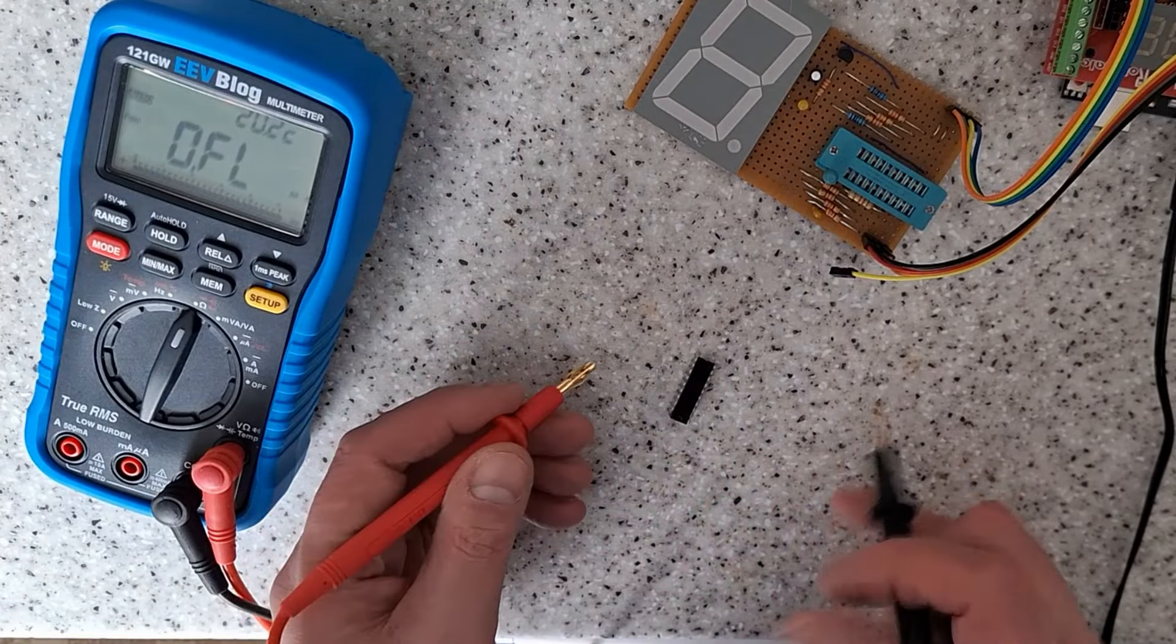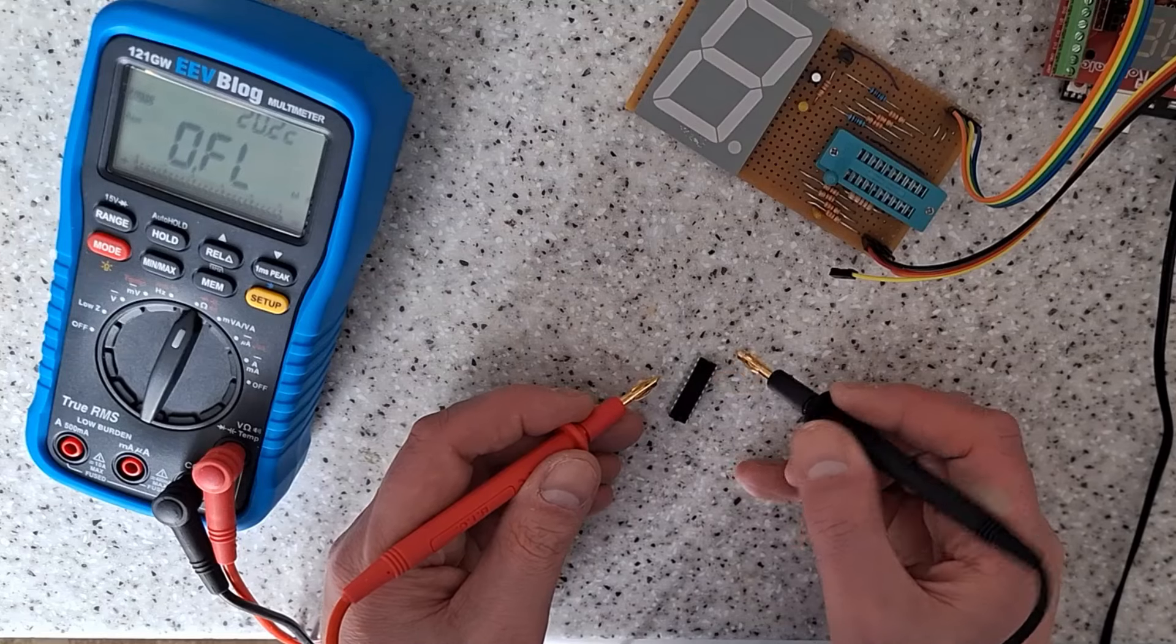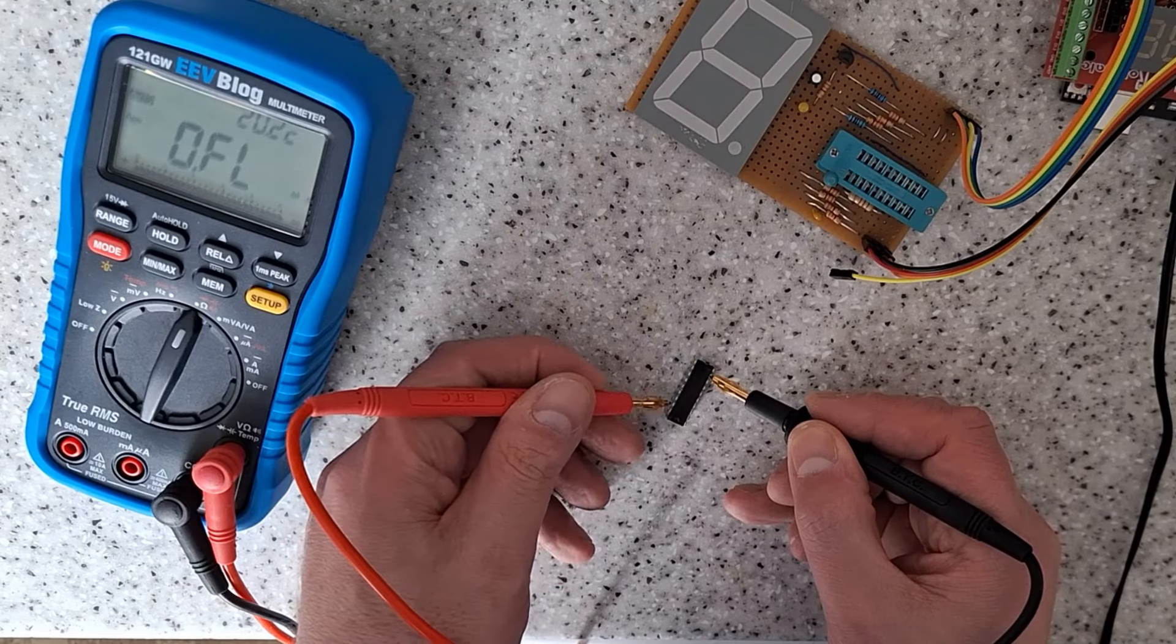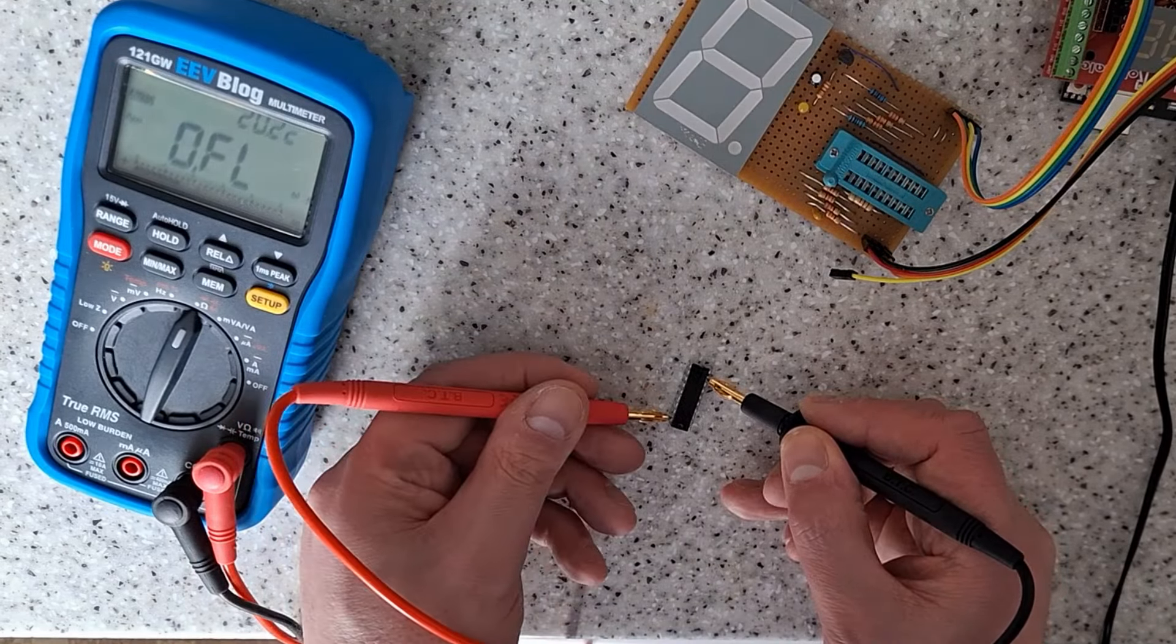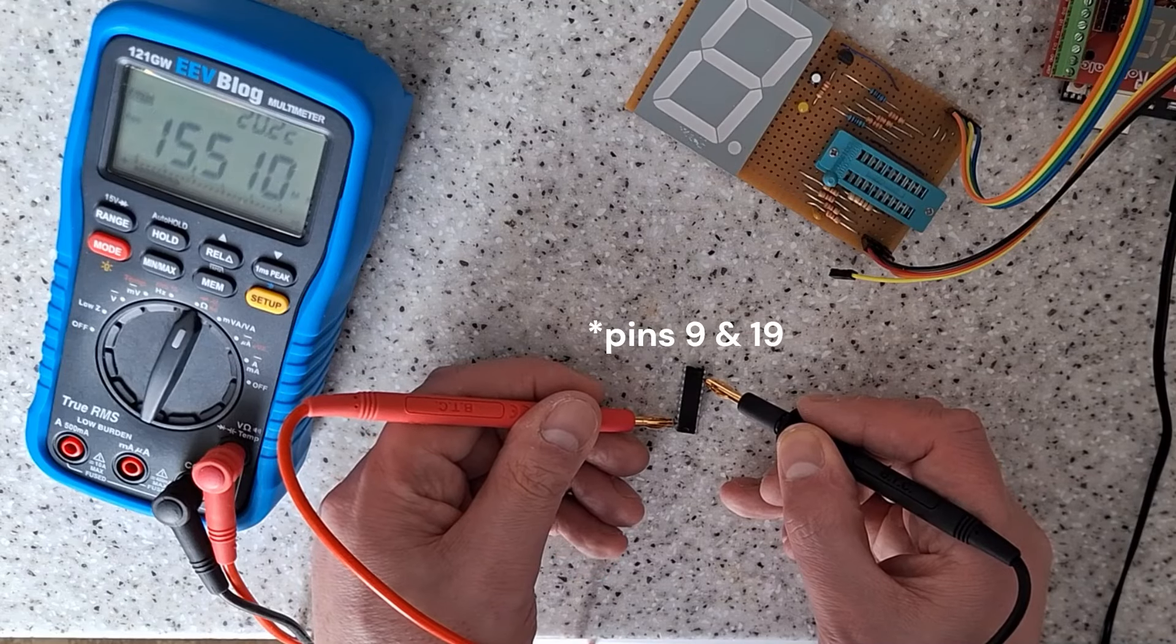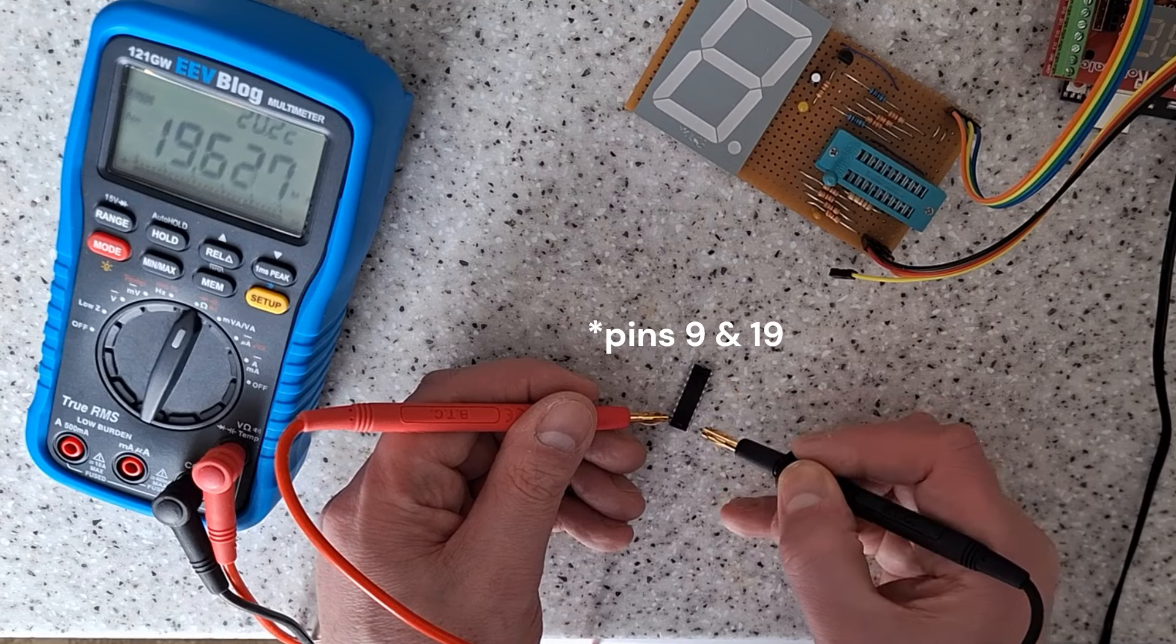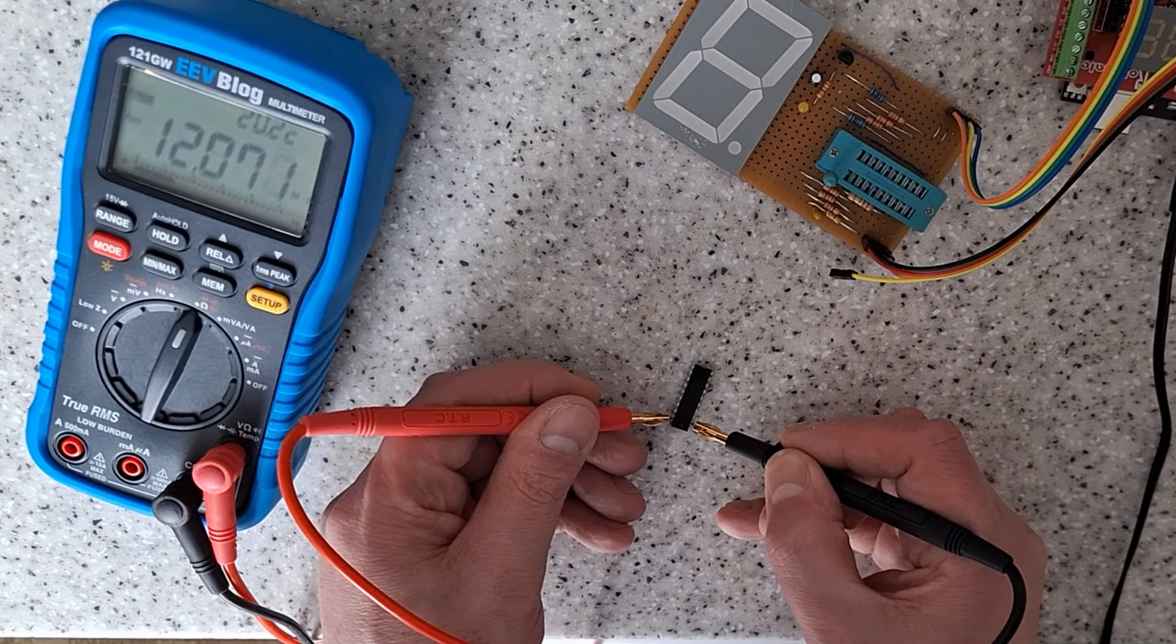First of all, you want to check between pin 9 and 18. You should get 15 megaohms. You should also get between them two about 12 megaohms. That's on a working chip.